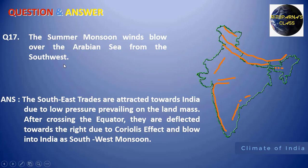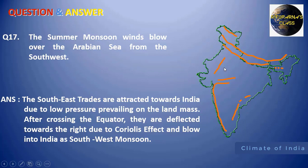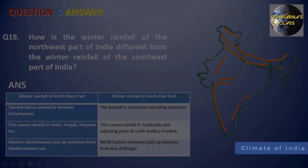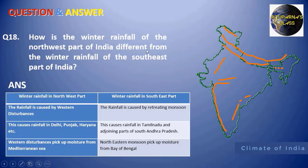Next: the summer monsoon winds blow over the Arabian Sea from the southwest — why? There is a development of low pressure in the northwestern portion of India, and this low pressure belt attracts wind from the high pressure belt. The planetary wind, the southeast trade winds, moves northwards. When it crosses the equator and enters the northern hemisphere, it becomes the southwest monsoon due to the Coriolis effect.